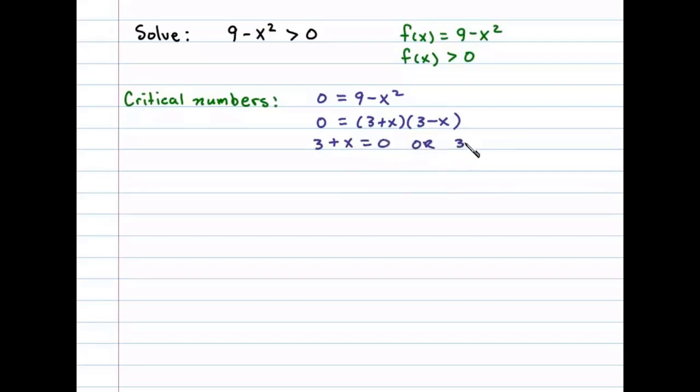3 plus x equals zero or 3 minus x equals zero. This gives x equals negative 3, or negative x equals negative 3 so x equals 3. So there are two critical numbers here, two roots: x equals plus or minus 3.